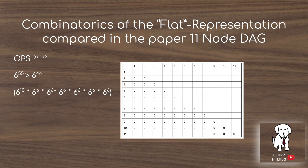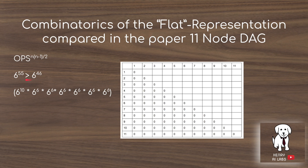The other way of structuring the neural architecture would be a flat representation, in contrast to the hierarchical representation. In the flat representation, the adjacency matrix directly represents all 11 nodes in the directed acyclic graph of the neural network. In this case, you have all the different slots in the adjacency matrix to fill with different operations, leading to 6^(11×10/2) different ways of filling the matrix — 6^55, which is a much larger number than the hierarchical space of 6^46.